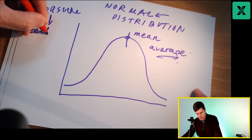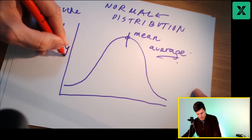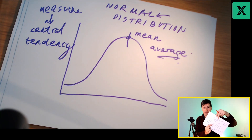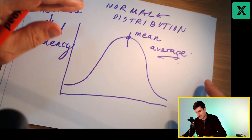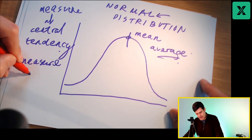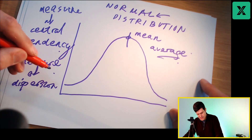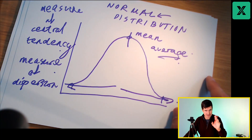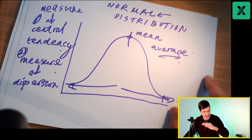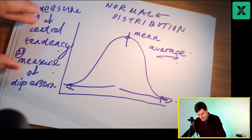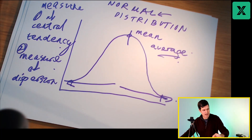A measure of central tendency — that's what we say when we're looking at a data set. There are two things we have to establish straight away. The first is a measure of central tendency: most of the values are towards the middle of the data set — we're talking about averages. Then we have to give Excel a measure of dispersion. Dispersion is how spread out the data is. These are the two key concepts for statistical analysis: central tendency and dispersion. Any statistical analysis of a numerical data set starts with these two measures.